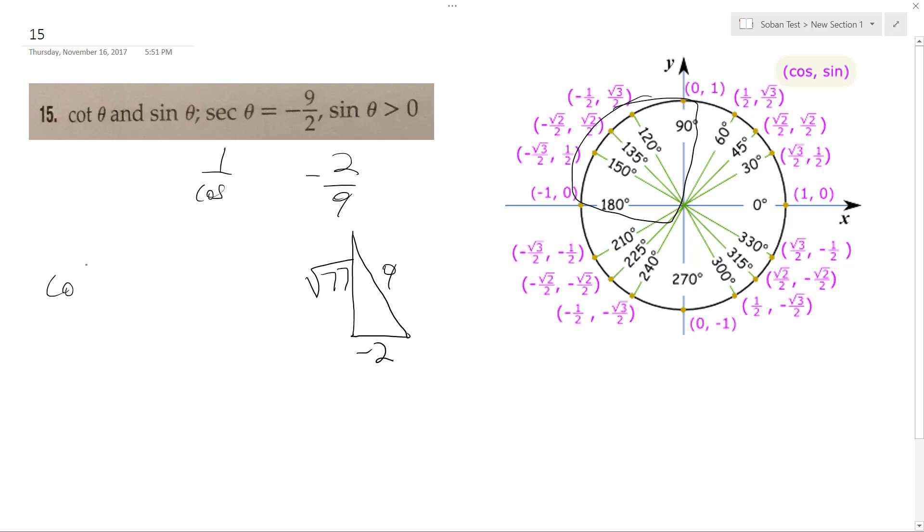Alright, so cotangent is going to be equal to adjacent over opposite, which is negative 2 over root 77, or if you rationalize it, negative 2 root 77 over 77. And the sine theta is going to be equal to root 77 over 9. Alright, I hope that helps.